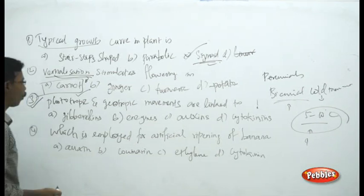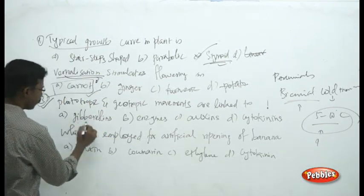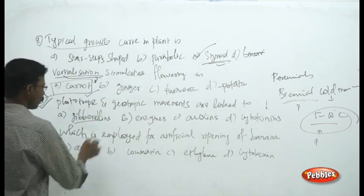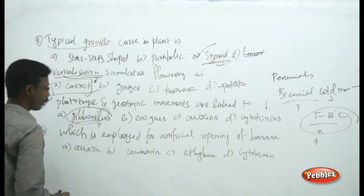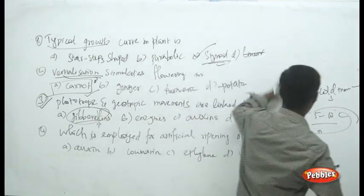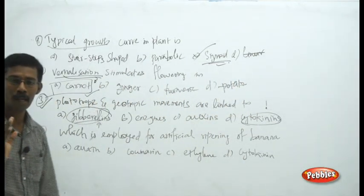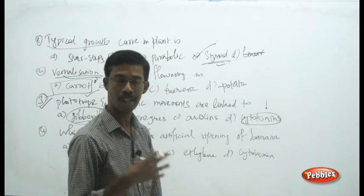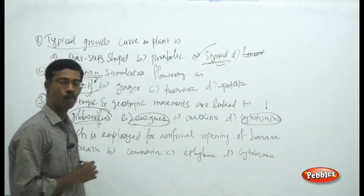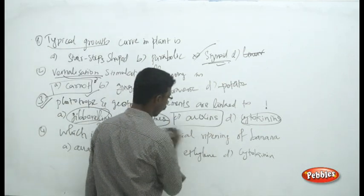Next question: the phototrophic and geotrophic movements are linked to which hormone? The choices are gibberellins, enzymes, auxins, and cytokinins. Gibberellins act on seed germination; cytokinins on chloroplast promotion; just forget about enzymes since the chapter is about hormones. The remaining choice is auxins. Auxins are present in root tips and shoot tips and promote elongation of those tips.